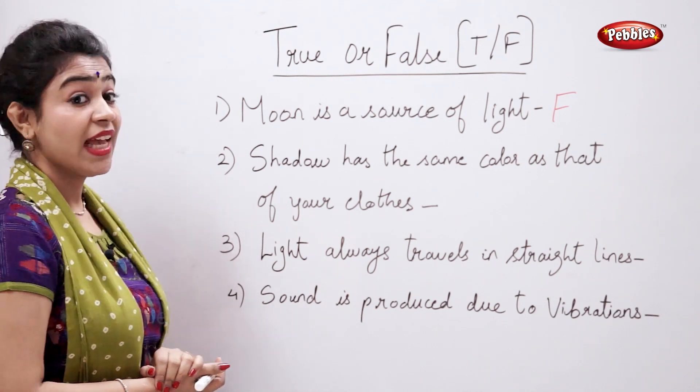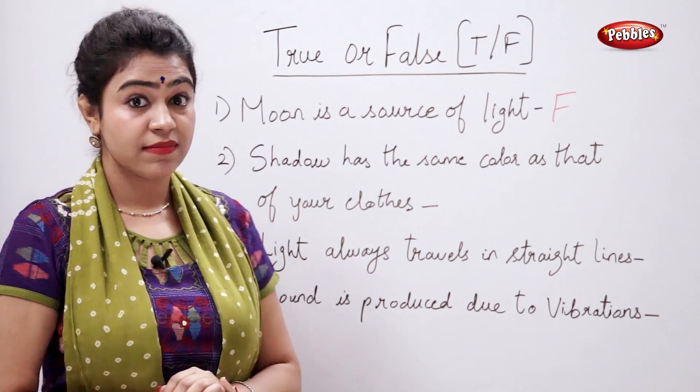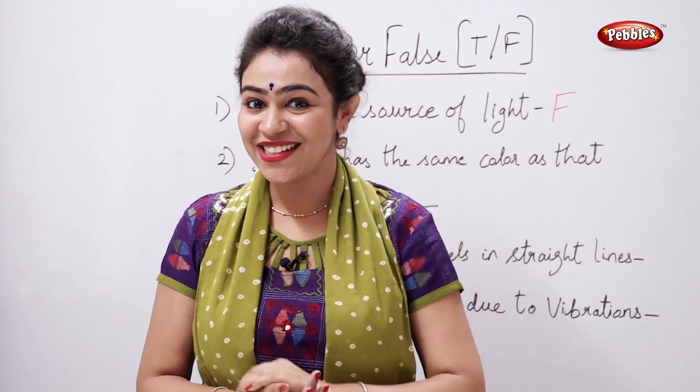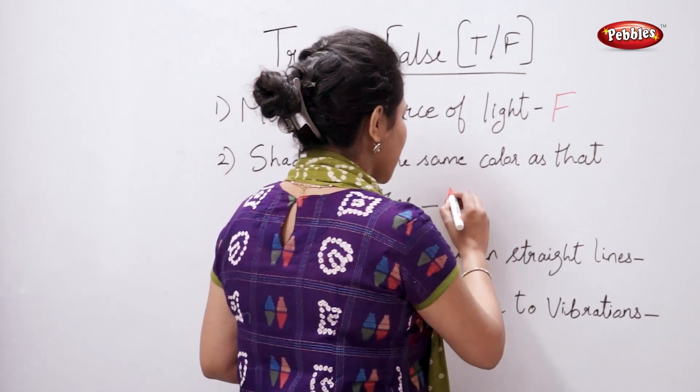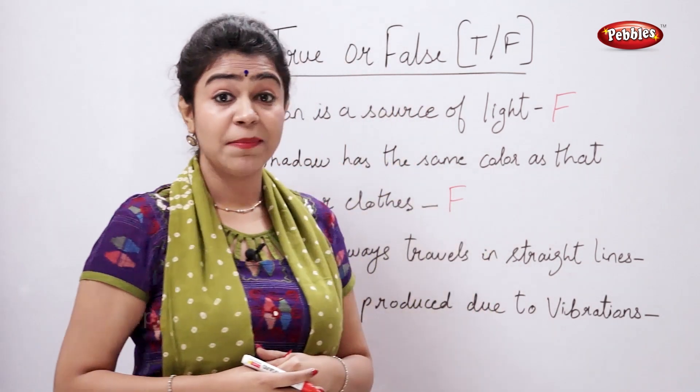Shadow has the same color as that of your clothes. Students, true or false? False. Shadows are always in black or grey color.